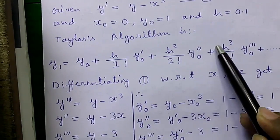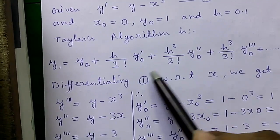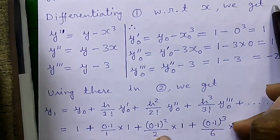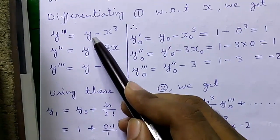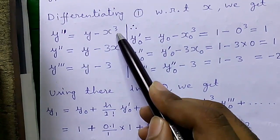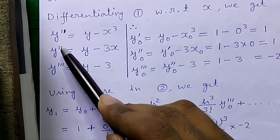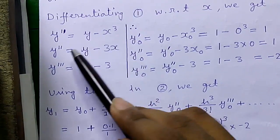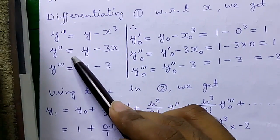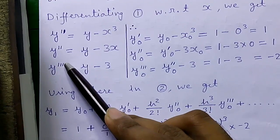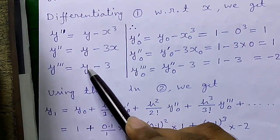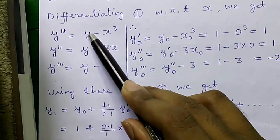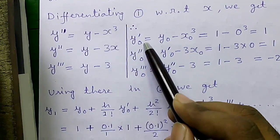This is Taylor's algorithm; I will explain it when we do the calculation. Now differentiating the given expression with respect to x: y' = y - x³ is our given expression. Differentiating for the first time gives the second-order derivative: y'' = y' - 3x². If we differentiate again we get the third-order derivative y''' = y'' - 3. Now putting x₀ and y₀ into these expressions we will get our y'₀ value.